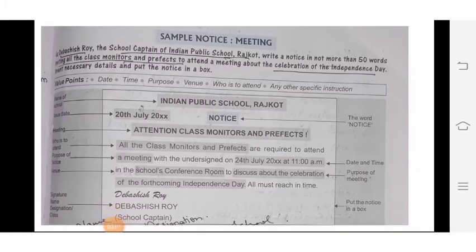Let's start with notices for the meeting. You are Vashish Roy, the school captain of Indian Public School. You have to write a notice in not more than 50 words inviting all the class monitors and prefects, mentioning necessary details.